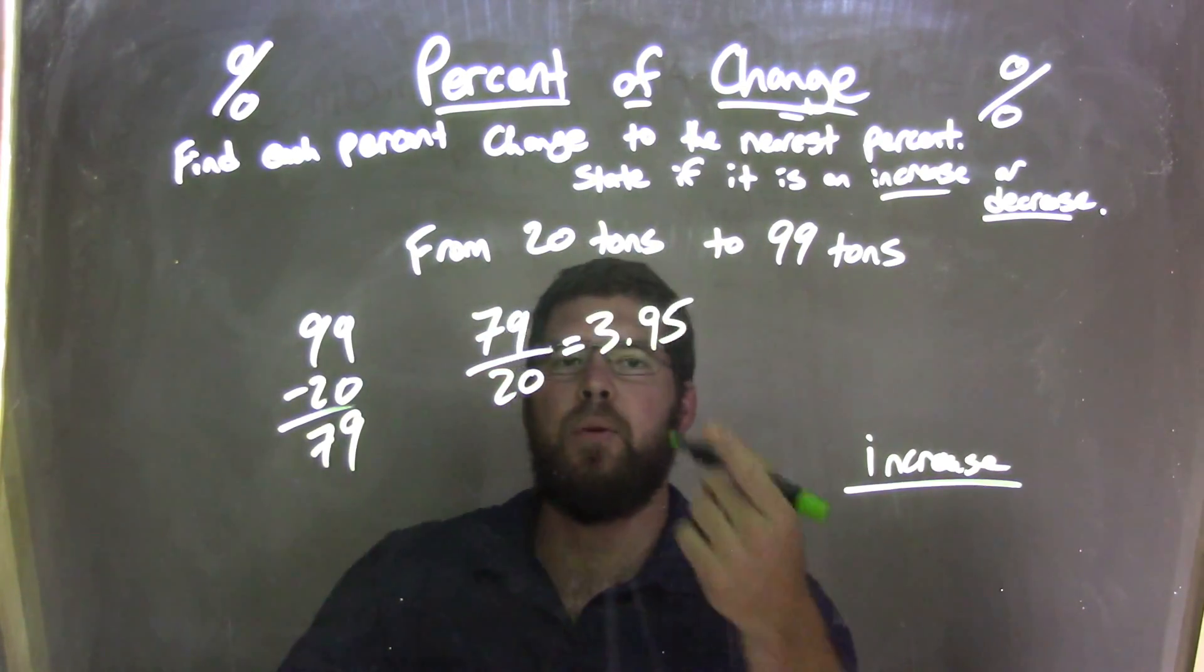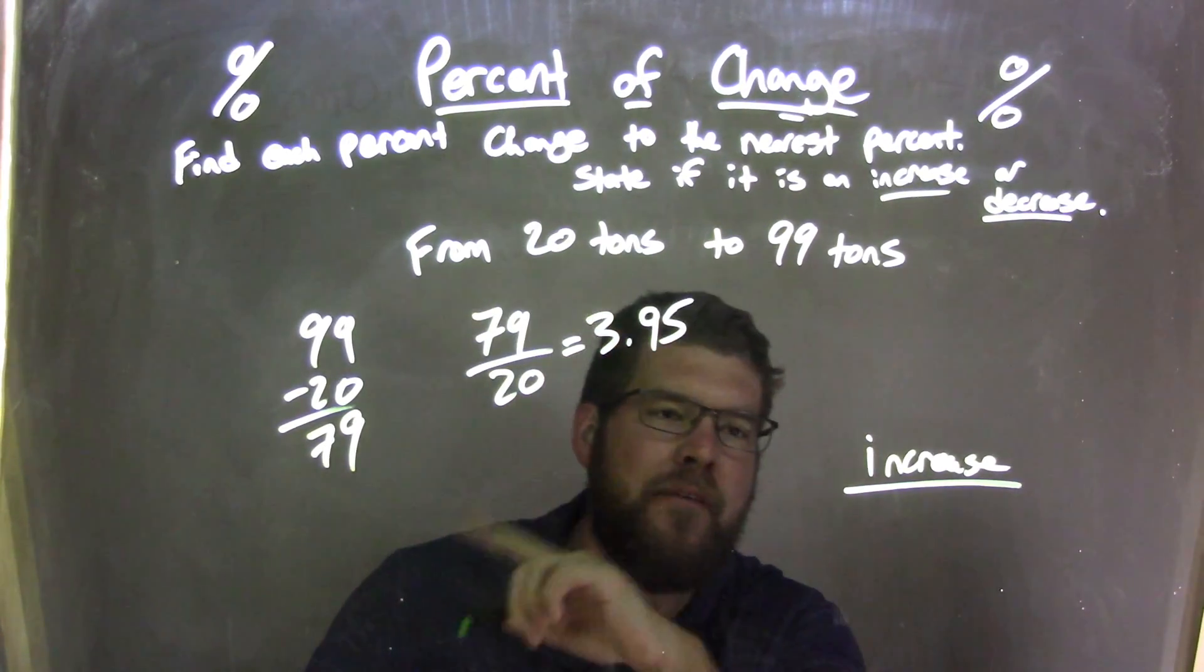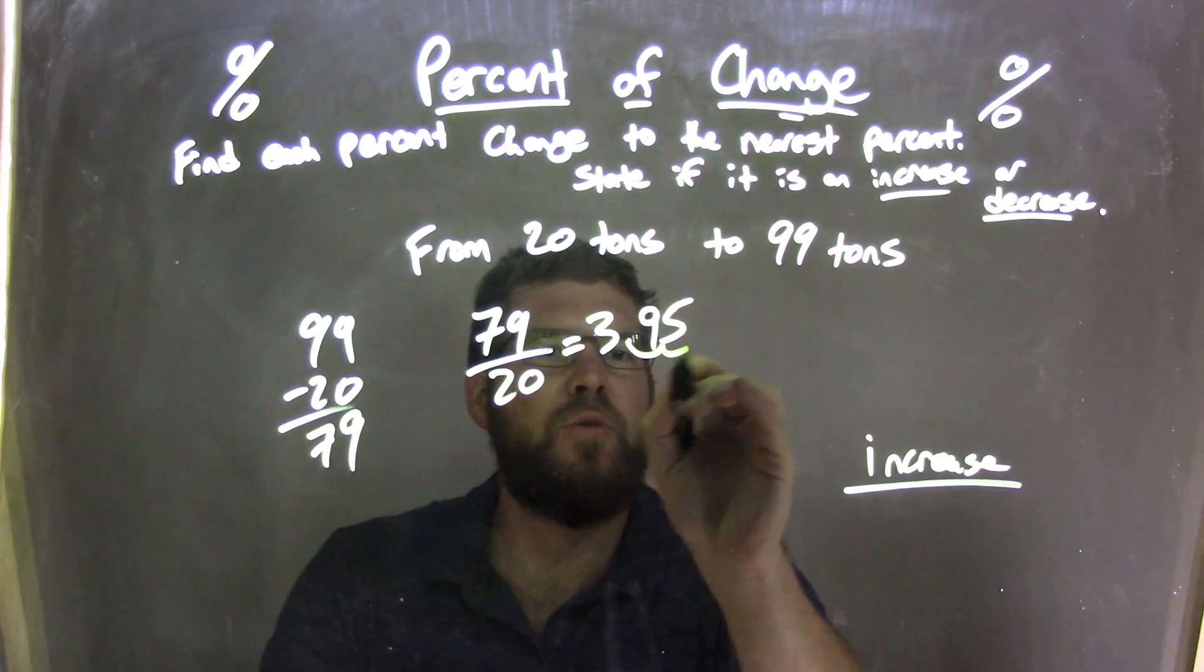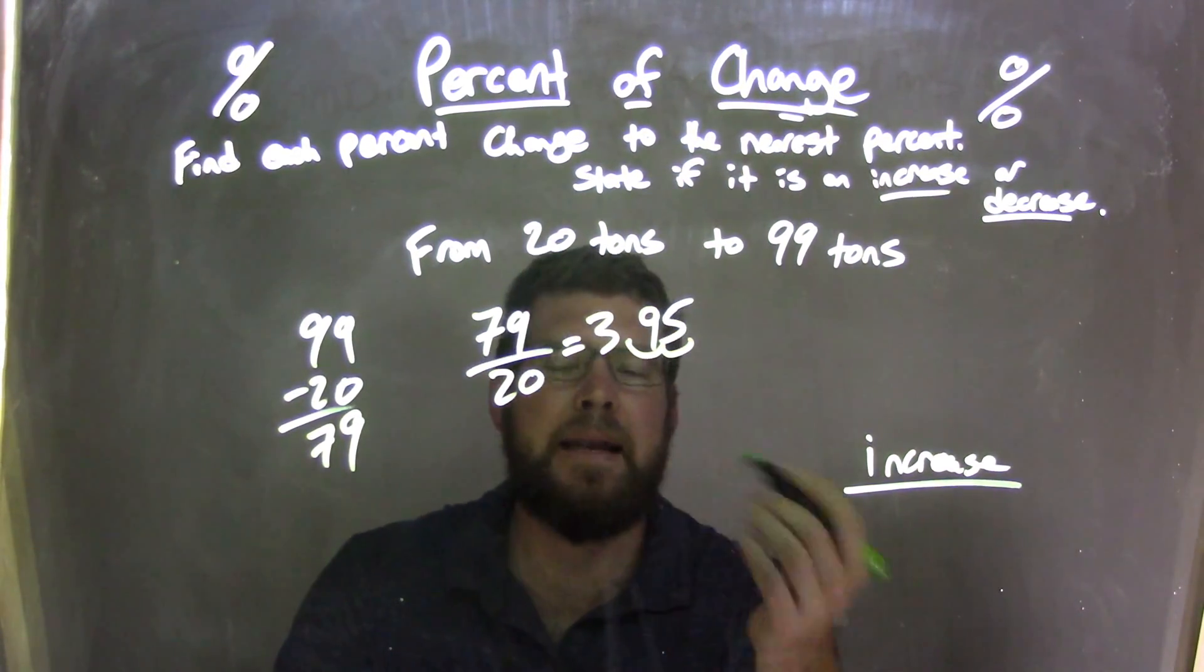So, I want to take that 3.95, and I'm going to convert that to a percent. It's a decimal. Convert it to a percent. Two units to the right. 3.95 comes out to be 395.